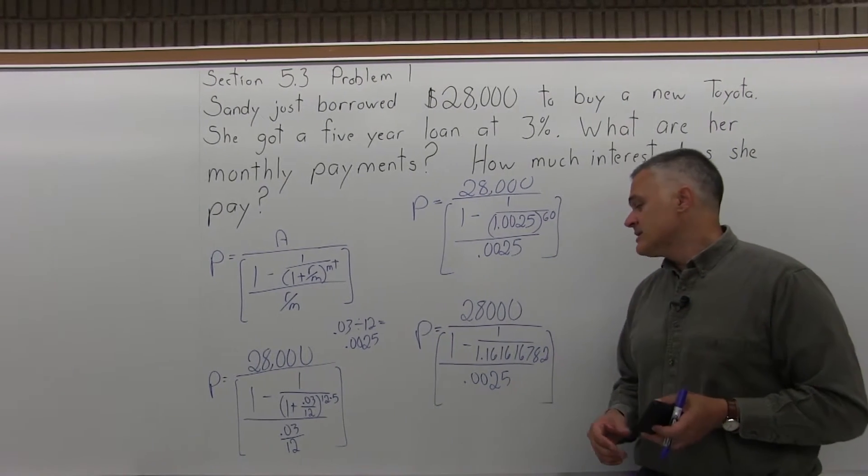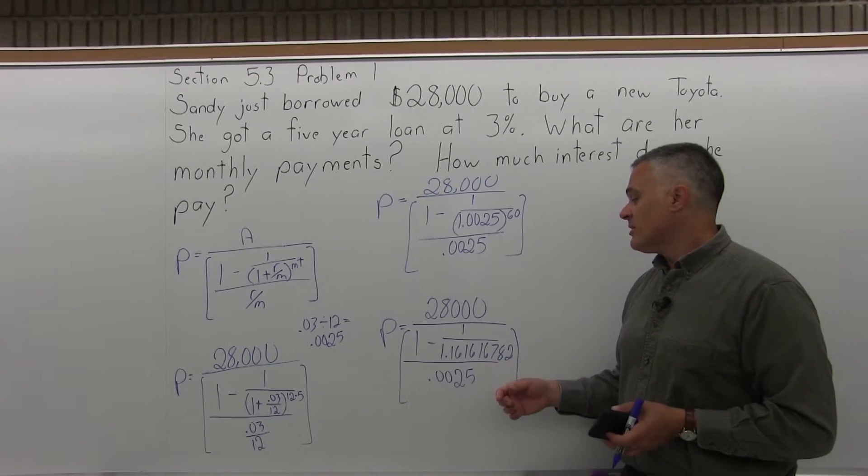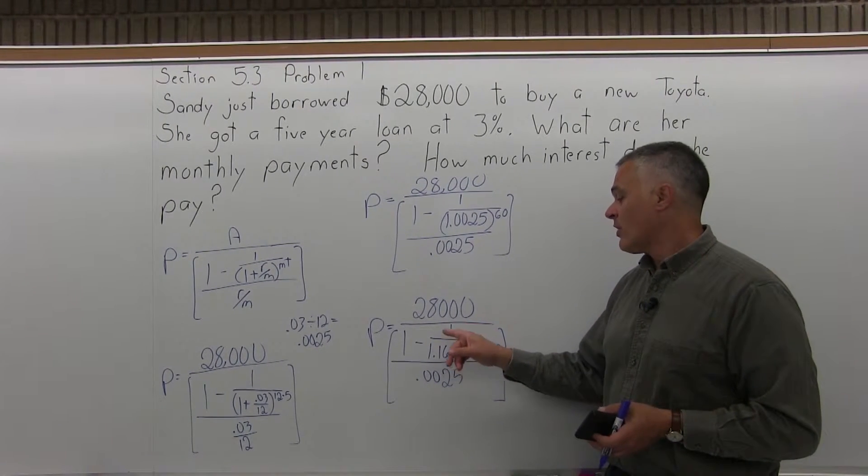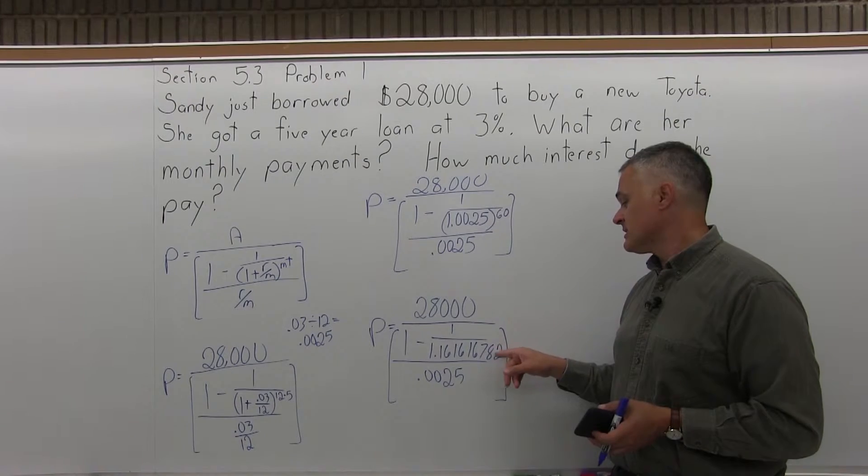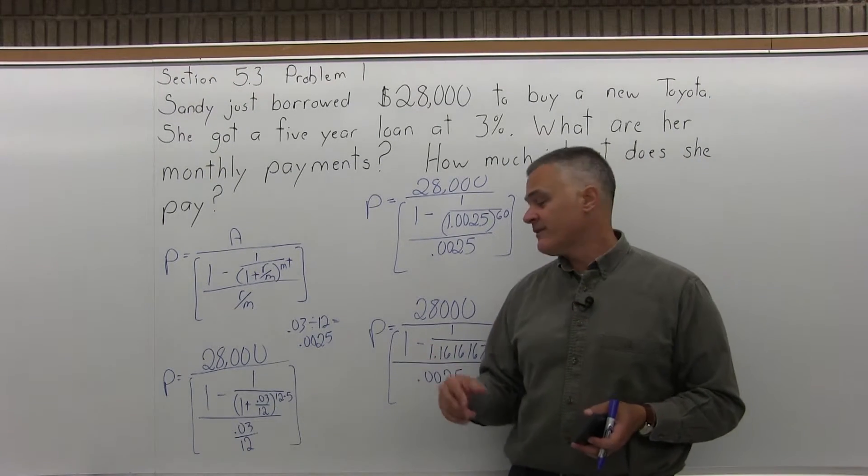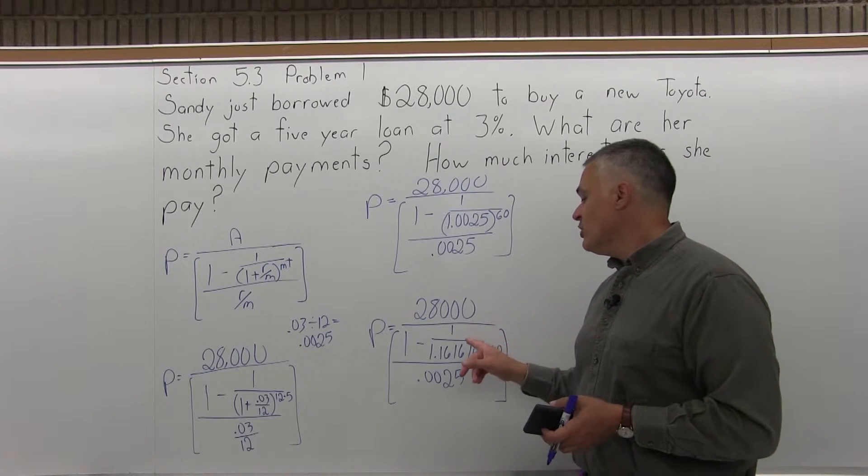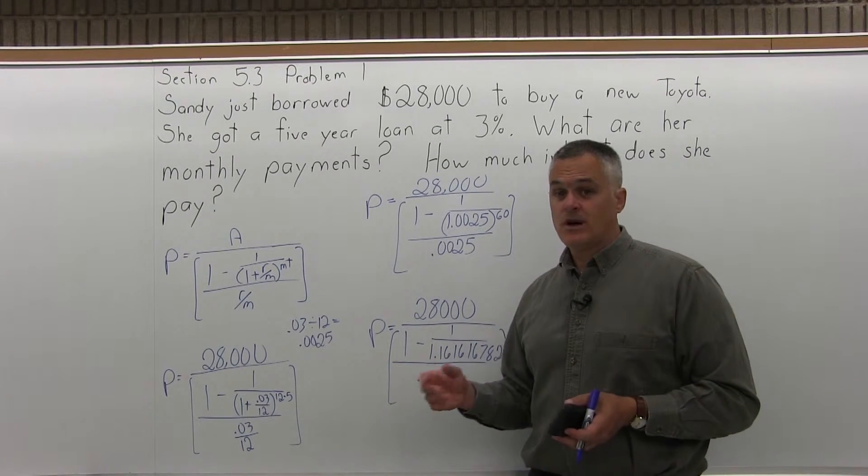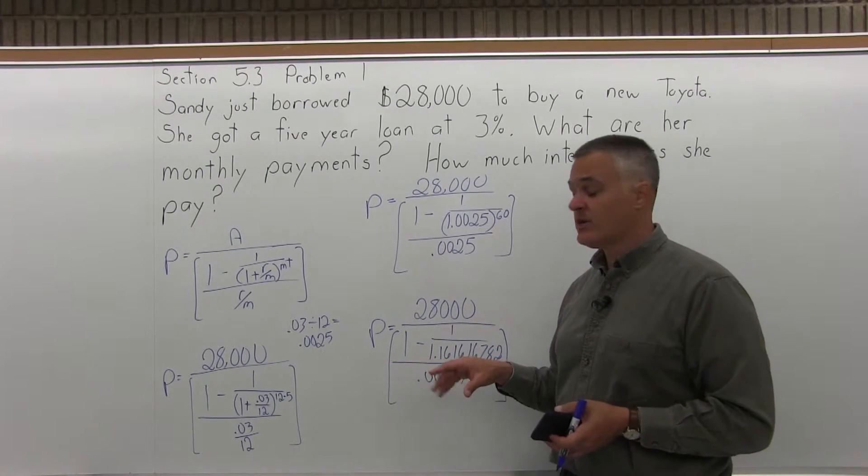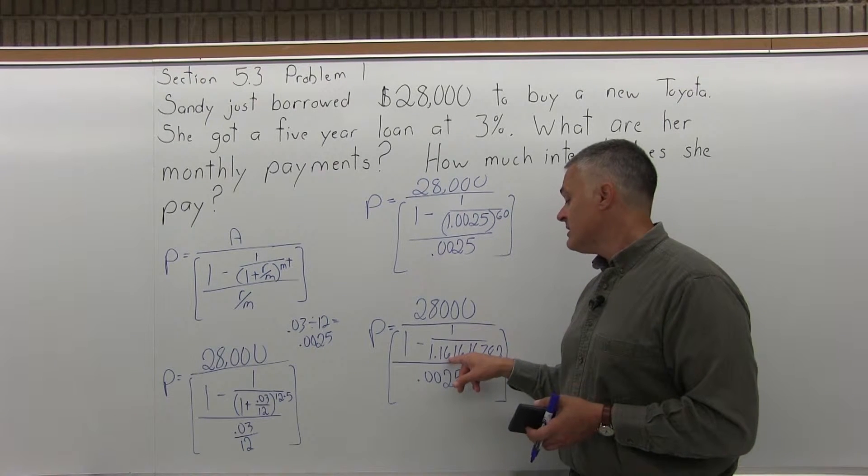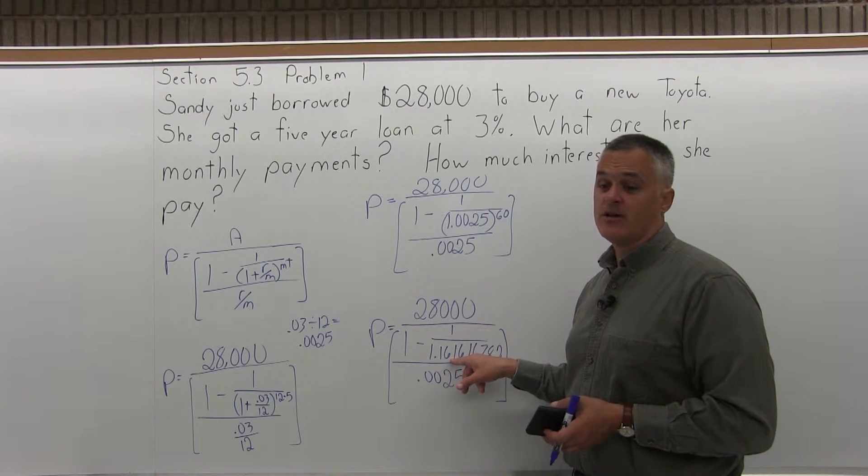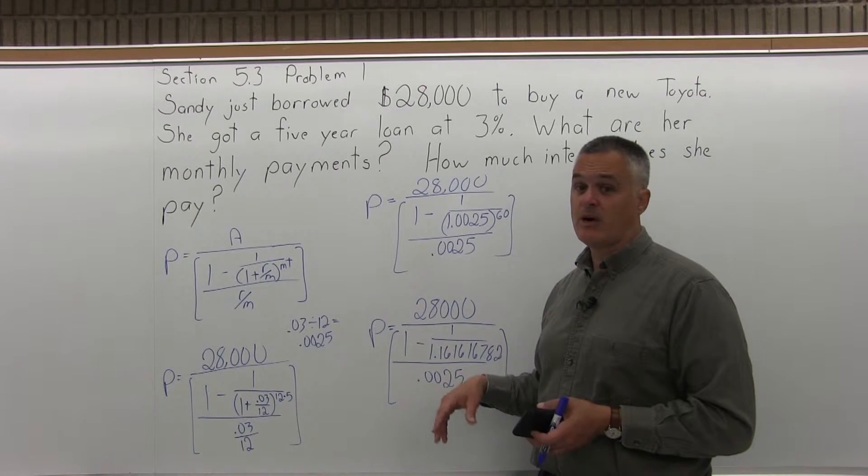And I'll close up my brackets. Now to continue making progress, the numerator of the brackets in the formula has 1 minus 1 over 1.161616782. So let me do that division, 1 divided by that kind of crazy decimal. And again, you can just type in the whole division on your calculator. Or before you clear the screen, you can save the big long decimal in your calculator. So you can just do 1 divided by recall memory.